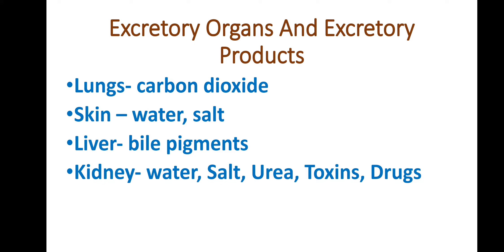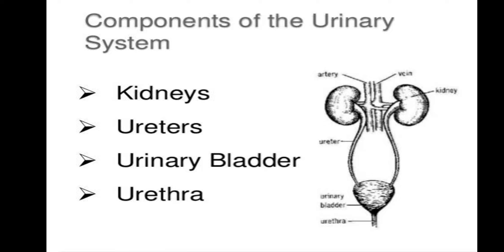In our body, different excretory organs are present. Lungs help us eliminate carbon dioxide when we exhale. Skin, which contains sweat glands, helps remove excess water and salt. Liver produces bile salts — the yellow color of fecal matter and urine is due to bile, which is eliminated through urine and feces. Kidneys, part of the urinary system, help eliminate excess water, salt, urea, toxic substances, and drugs.